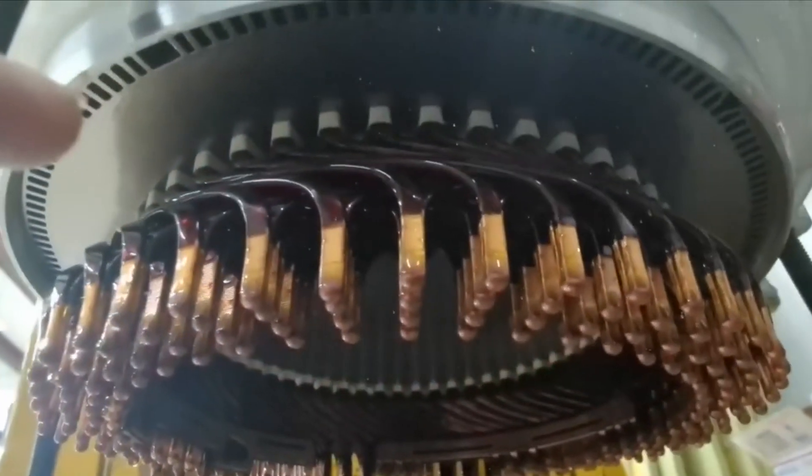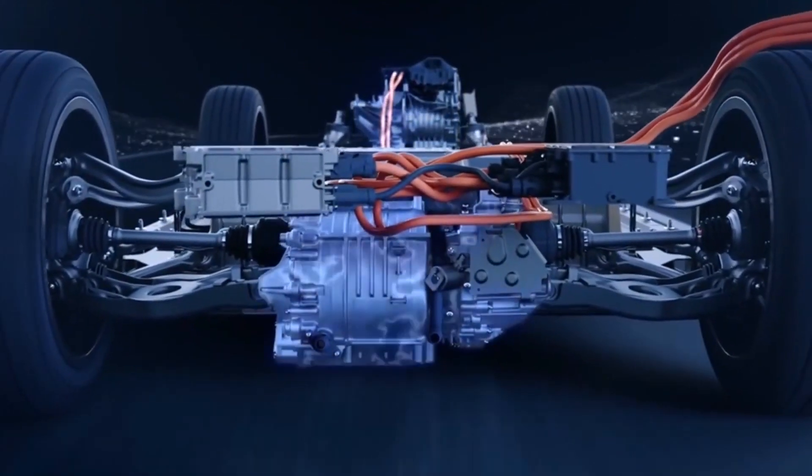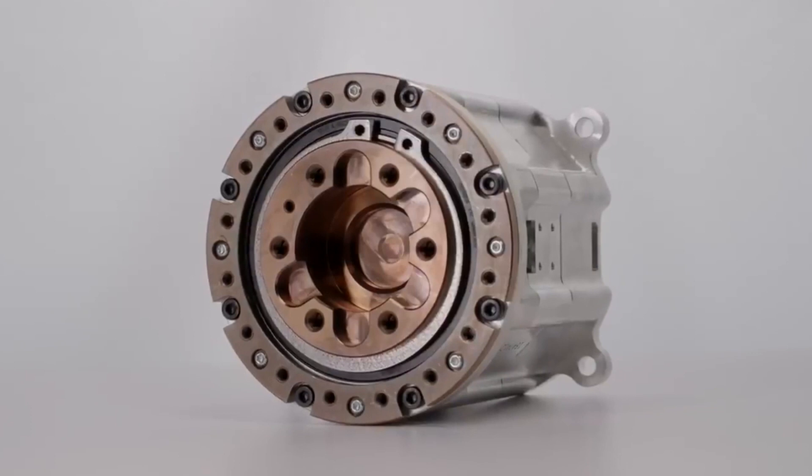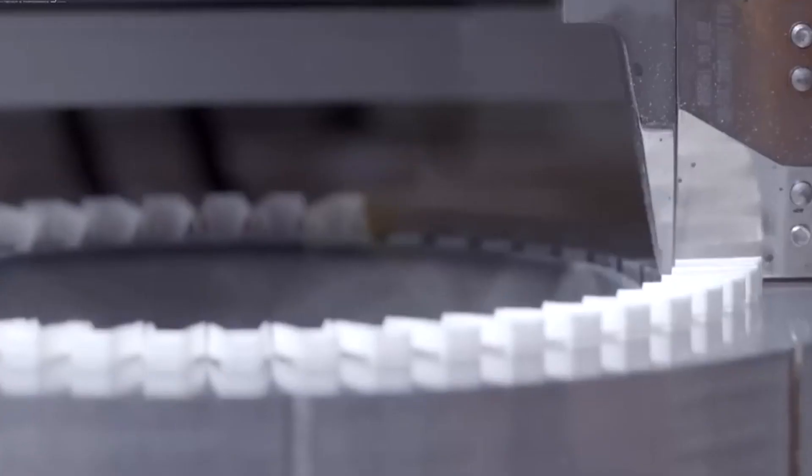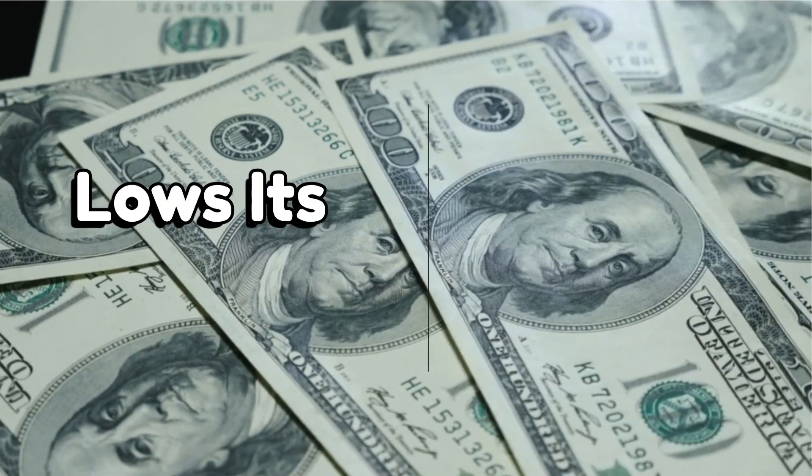With a fill factor of up to 0.7, hairpin motors offer a 20 to 30 percent power output increase for the same motor size, making them ideal for space constrained applications. The use of flat wire also reduces the motor's outer diameter and volume, which decreases the number of other materials used in the motor and further lowers its cost.